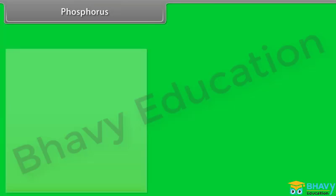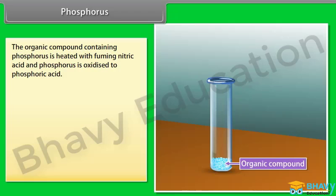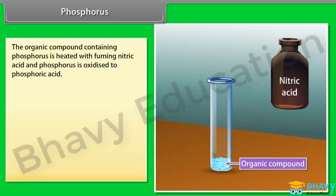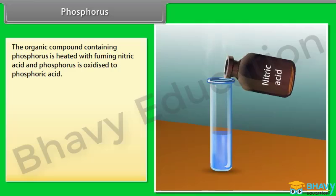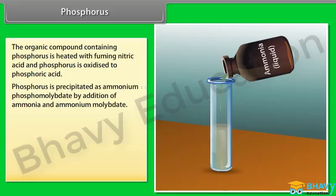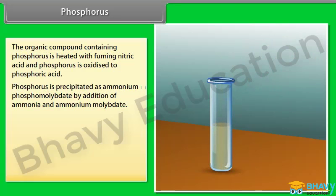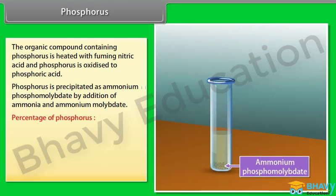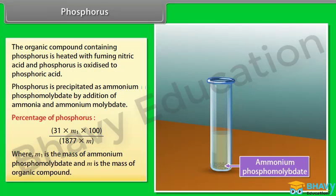Phosphorus: The organic compound containing phosphorus is heated with fuming nitric acid; phosphorus is oxidized to phosphoric acid and precipitated as ammonium phosphomolybdate by addition of ammonia and ammonium molybdate. Percentage of phosphorus = 31 × M₁ × 100 ÷ (1877 × M), where M₁ is the mass of ammonium phosphomolybdate and M is the mass of the organic compound.